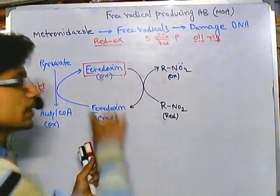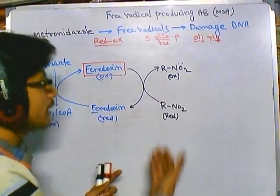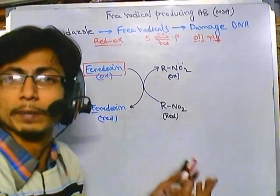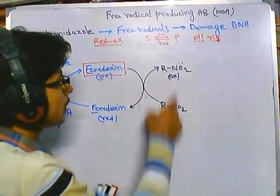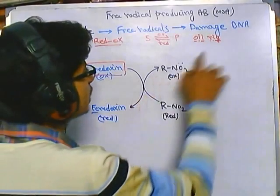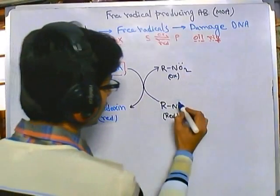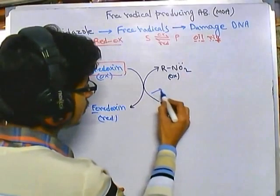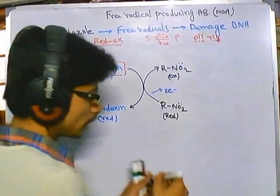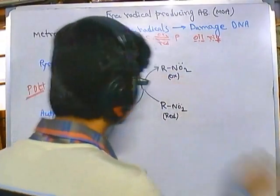When ferredoxin is brought to its reduced form, it is simultaneously oxidizing RNO₂. Here R can be any kind of chemical group, such as CH₃. As RNO₂ is oxidized, we get NO₂ with a lone pair of electrons. Oxidation means losing electrons — if we had two pairs of electrons, two electrons are removed, leaving only two electrons for this oxygen.